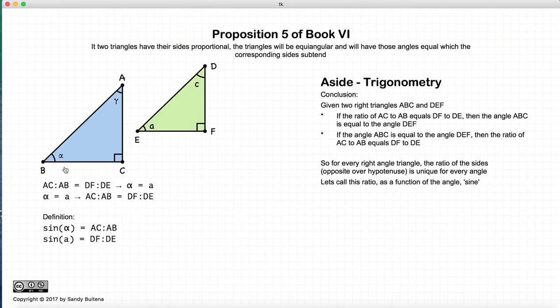So we have that the sine of alpha is AC to AB. The sine of A is DF to DE. If these two are equal, the angles are equal. If the angles are equal, these two are equal. Again, this is for angles only between 0 and 90 degrees, because we're talking about right-angled triangles.